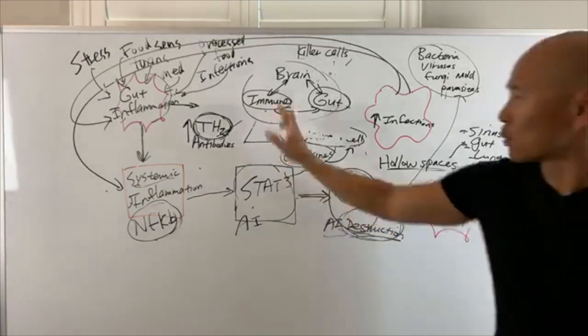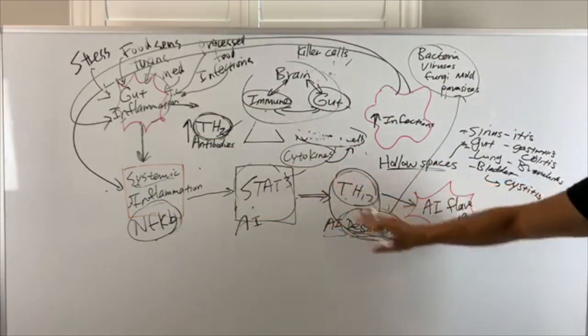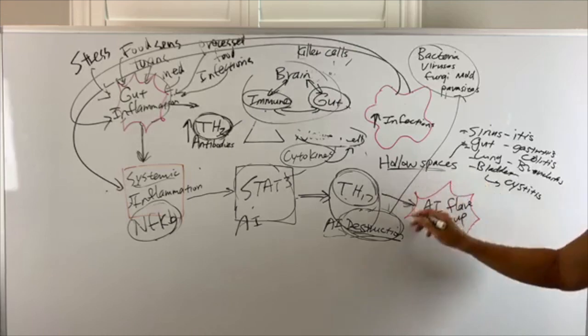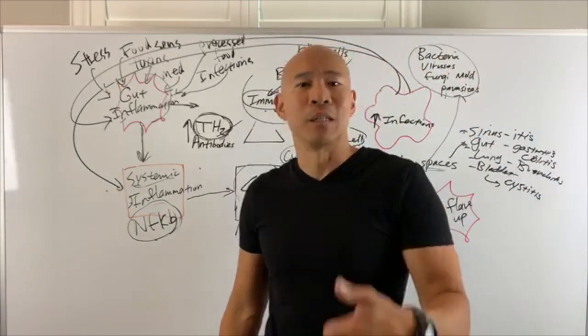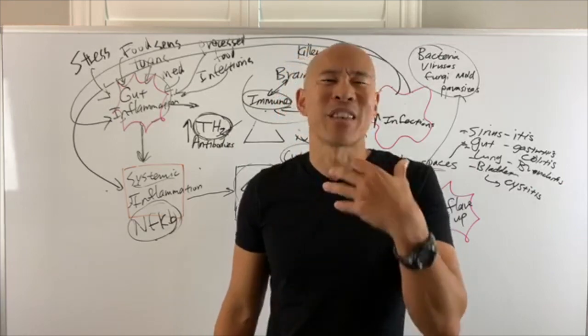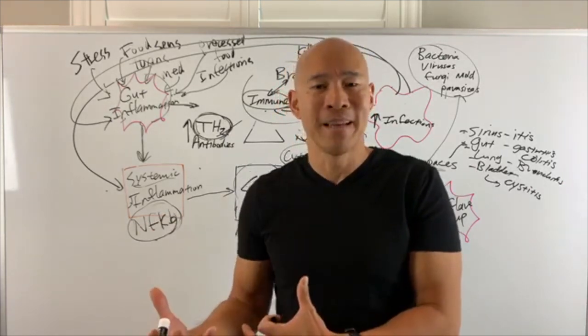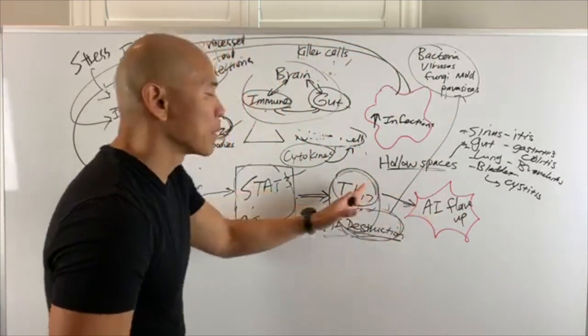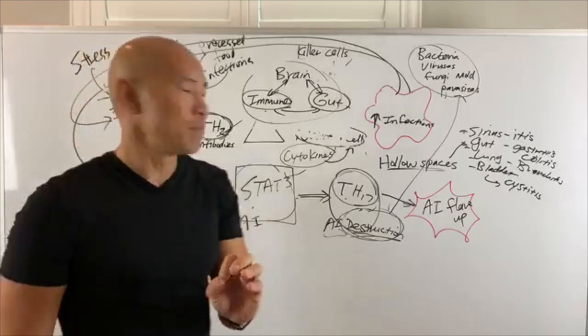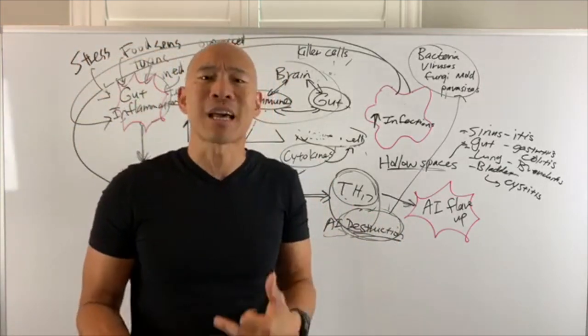So when you have this process, the systemic inflammation and the activation of STAT3 and TH17, eventually you get this autoimmune flare-up, which is what you experience at the very end. You feel the fatigue, the brain fog. You feel the thyroid problem. You feel the inflammation in your body, the joint pain. That's the end result, folks. That's here. But you got to be able to work your way back. And many of these processes, there's not really a drug for it. You just got to fix it. Through nutrition, lifestyle change, detox.